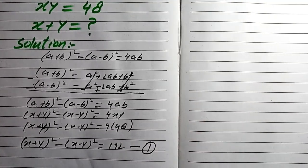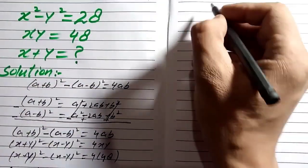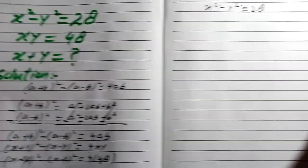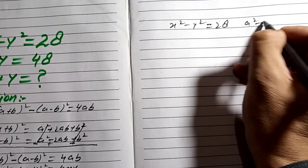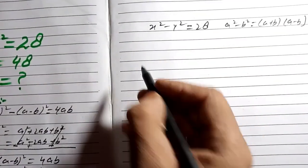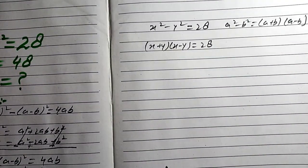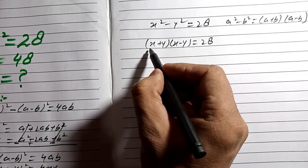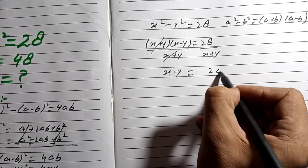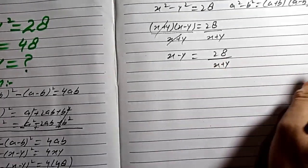We are also given that x² minus y² equals 28. Using the difference of squares formula, x² minus y² equals (x+y)(x-y) equals 28. Dividing both sides by (x+y), we get x minus y equals 28 divided by (x+y).